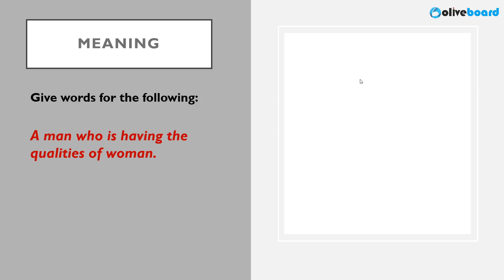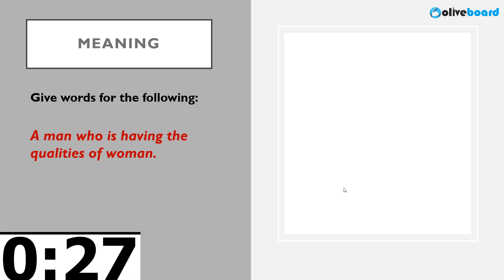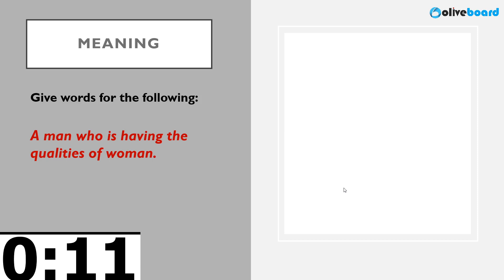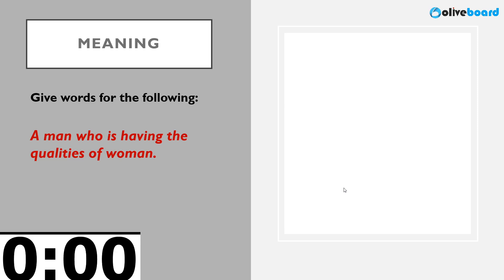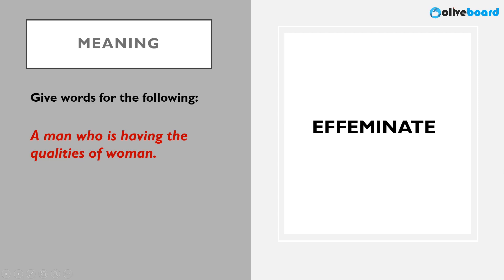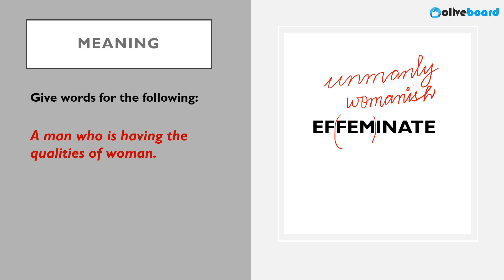Next: a person who is having the qualities of a woman — a man who is unmanly or womanish. The correct word is effeminate. You can relate from the word female — F-E-M is given. Effeminate means womanish, somebody who is unmanly, who shows the characters of a woman.